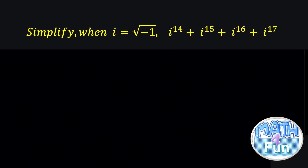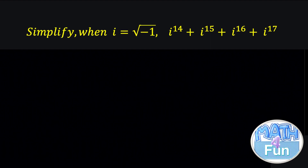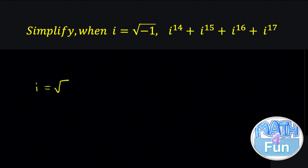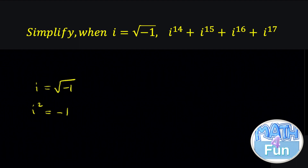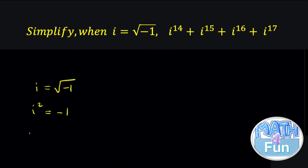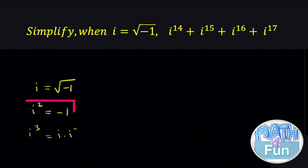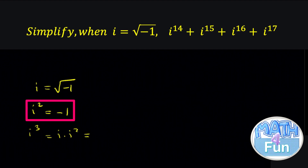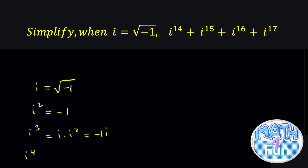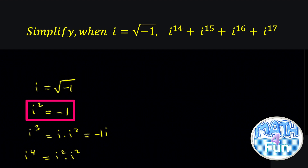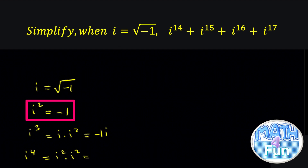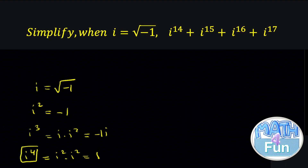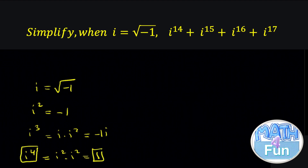So let me give you a way for if you don't have the new calculator. Since they said i equals radical minus 1, that means i squared is equal to minus 1. Now, to get i cubed: i cubed is equal to i times i squared, which equals i times minus 1, so that's minus i. Now, i to the power 4 is equal to i squared times i squared, which is minus 1 times minus 1, which is plus 1 — which means that every i to the power 4 you can ignore; it's equal to 1.